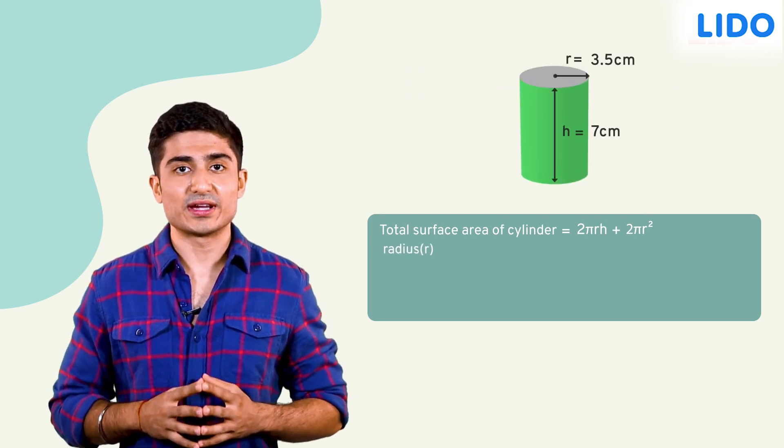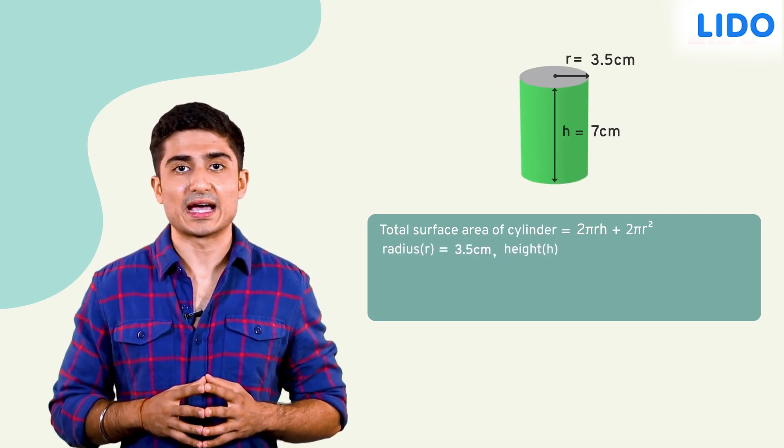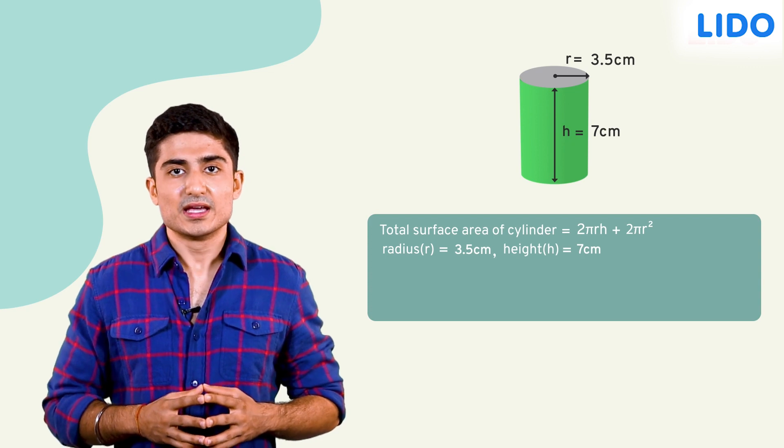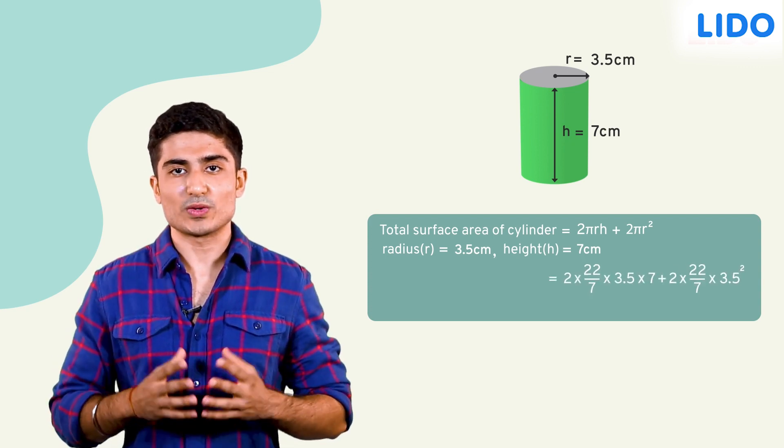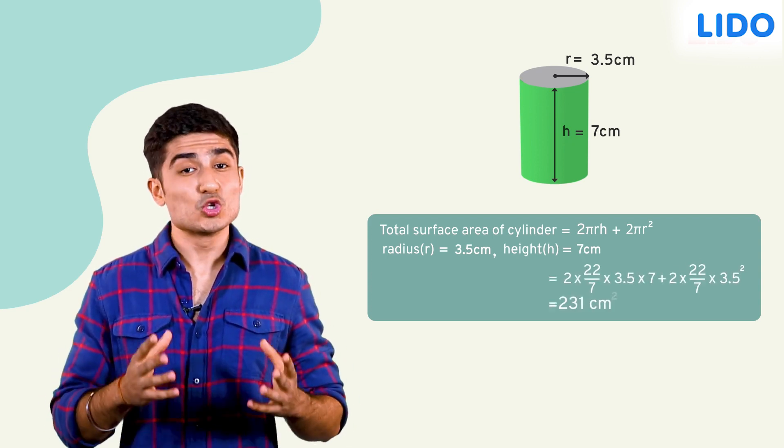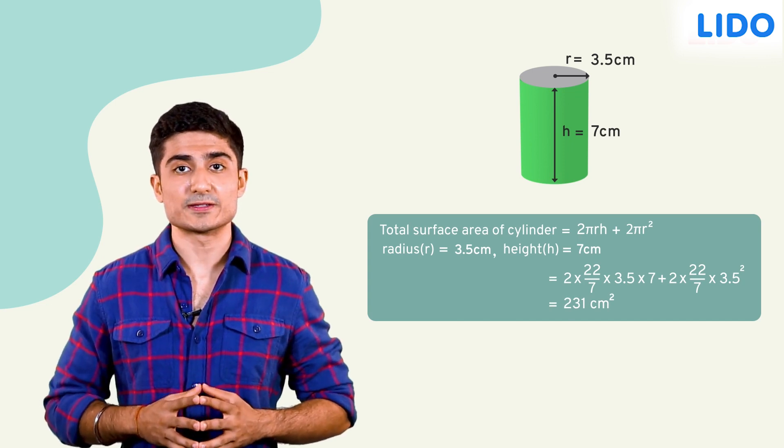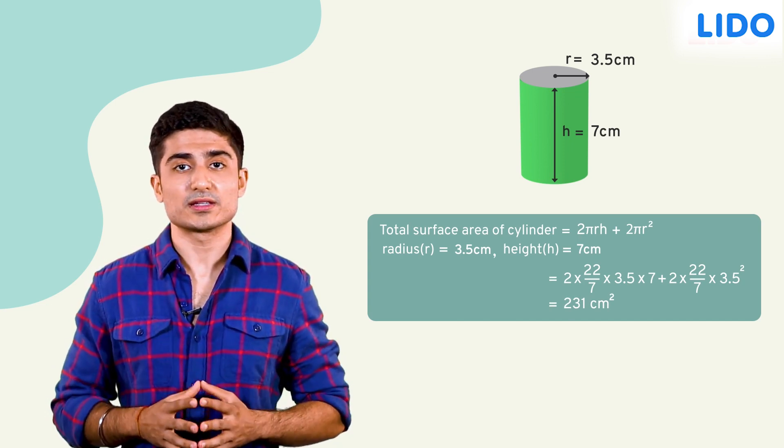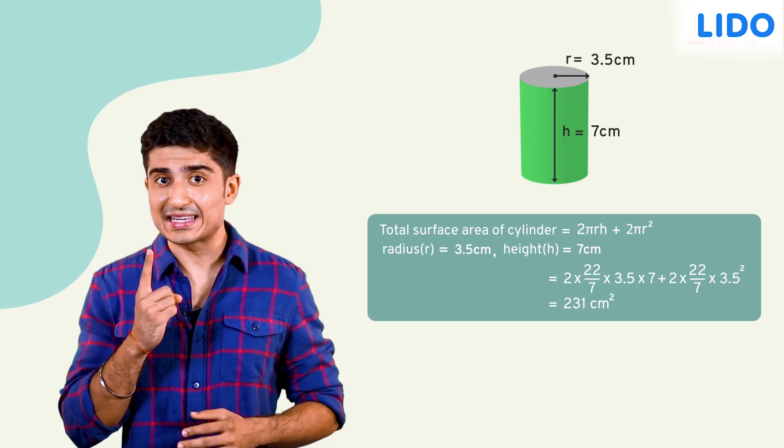The can I've designed has a radius of 3.5 cm and a height of 7 cm. Substituting the values of r and h, we find the surface area of the can as 231 square centimeters. Thus, I will need 231 square centimeters of metal sheet to make a single can.